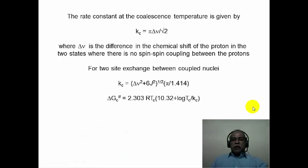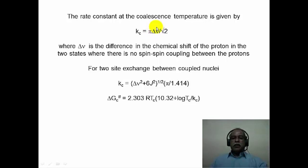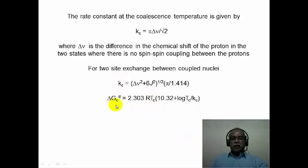At the coalescence temperature, one can determine the rate constant of the reaction. The rate constant at coalescence temperature Kc is given by Kc = π·Δν / √2, where Δν is the difference in chemical shift values between the two states (e.g., axial and equatorial hydrogen). This is a one-point kinetics approach, valid when there is no spin-spin coupling. If spin-spin coupling exists between exchangeable protons, the coupling constant must also be included in the expression. From Kc, thermodynamic parameters like activation energy can also be calculated.